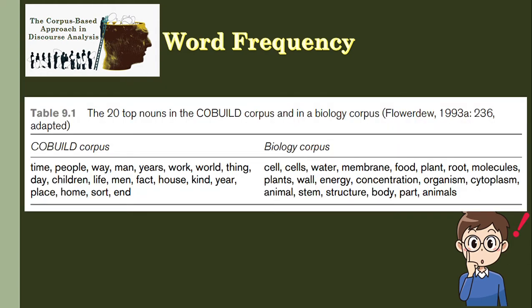Here is an example of corpus-based language analysis anchored on word frequency. Cobuild was able to identify the top 20 nouns as: time, people, way, man, years, work, world, thing, day, children, life, men, fact, house, kind, year, place, home, sort, and end.